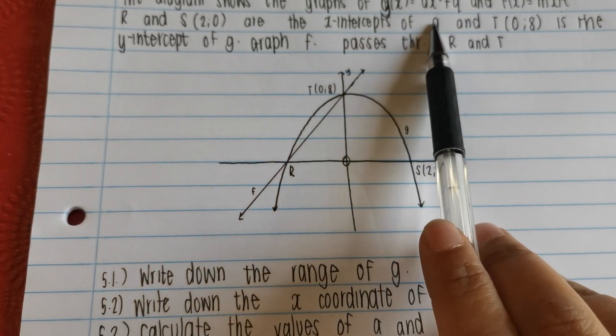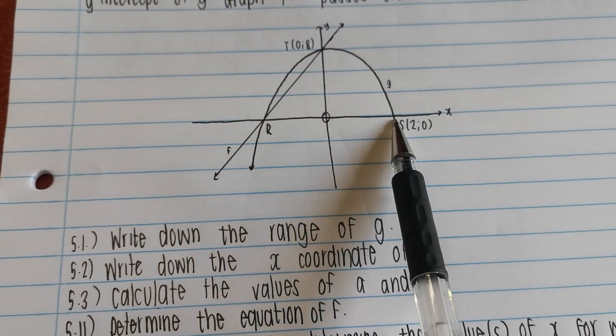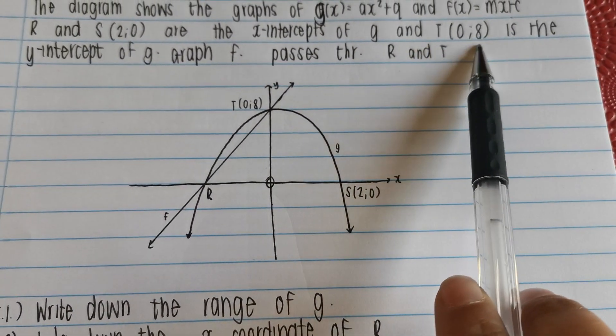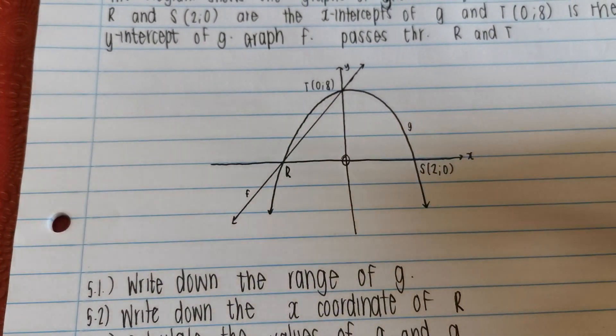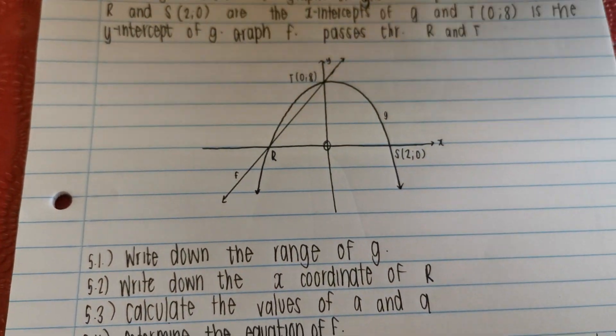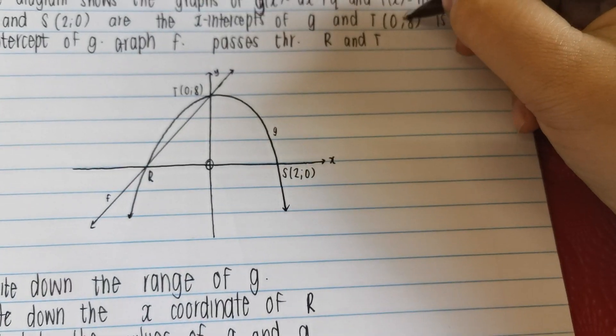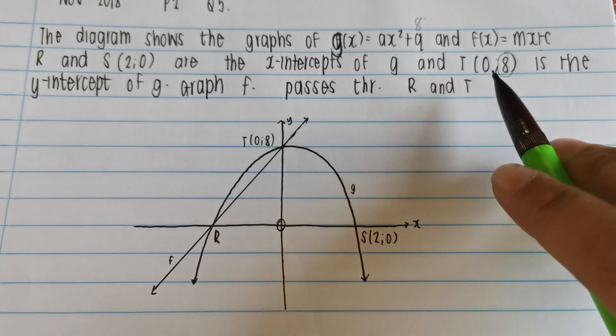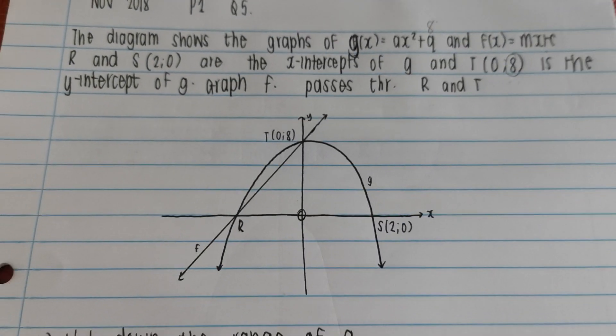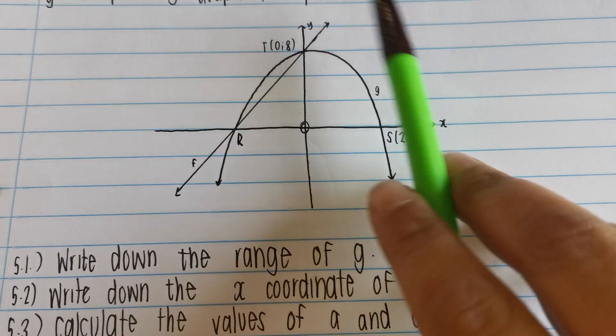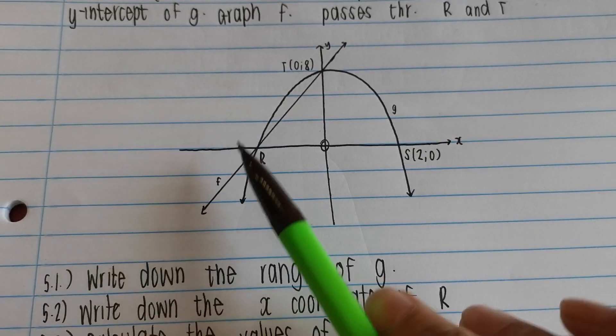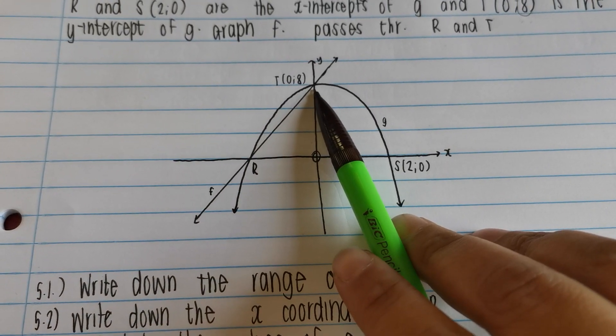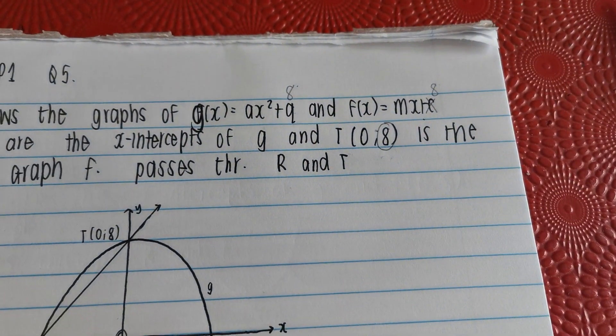It says r and s are the x-intercepts of g. Let's go look at the graph. There it is, r, s are the x-intercepts. They gave us s. There it is. And t, which is 0 and 8, is the y-intercept. There it is. Automatically, before I even go to the questions, let's fill in. I know that this 8 over here is going to be the 8 over here of our q value because we know that the y-intercept and turning point in gradient is the same value. It's this q value. Again, it says graph f passes through point r and point t. We see that. So it shares the same x-intercept and the y-intercept. If it passes through there, isn't the c value over here also 8?